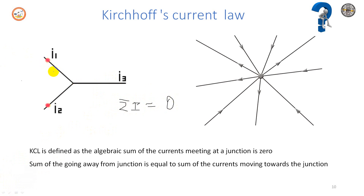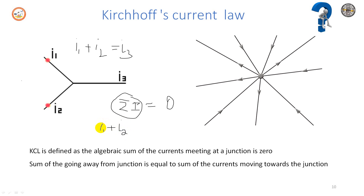If you look at this example, the current I1 entering here and I2 entering here should leave as I3. So I can write I1 plus I2 is equal to I3. The incoming current into the junction is considered positive, and the current leaving the junction is considered negative. So we can write I1 plus I2 minus I3 is equal to zero. Transferring I3 to the right-hand side, the sum of the current entering the node equals the sum of the current leaving the node. This center point is called a node.